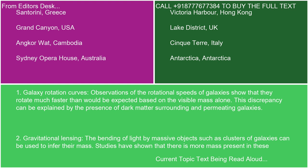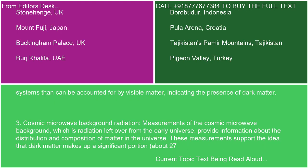2. Gravitational Lensing. The bending of light by massive objects such as clusters of galaxies can be used to infer their mass. Studies have shown that there is more mass present in these systems than can be accounted for by visible matter, indicating the presence of dark matter.